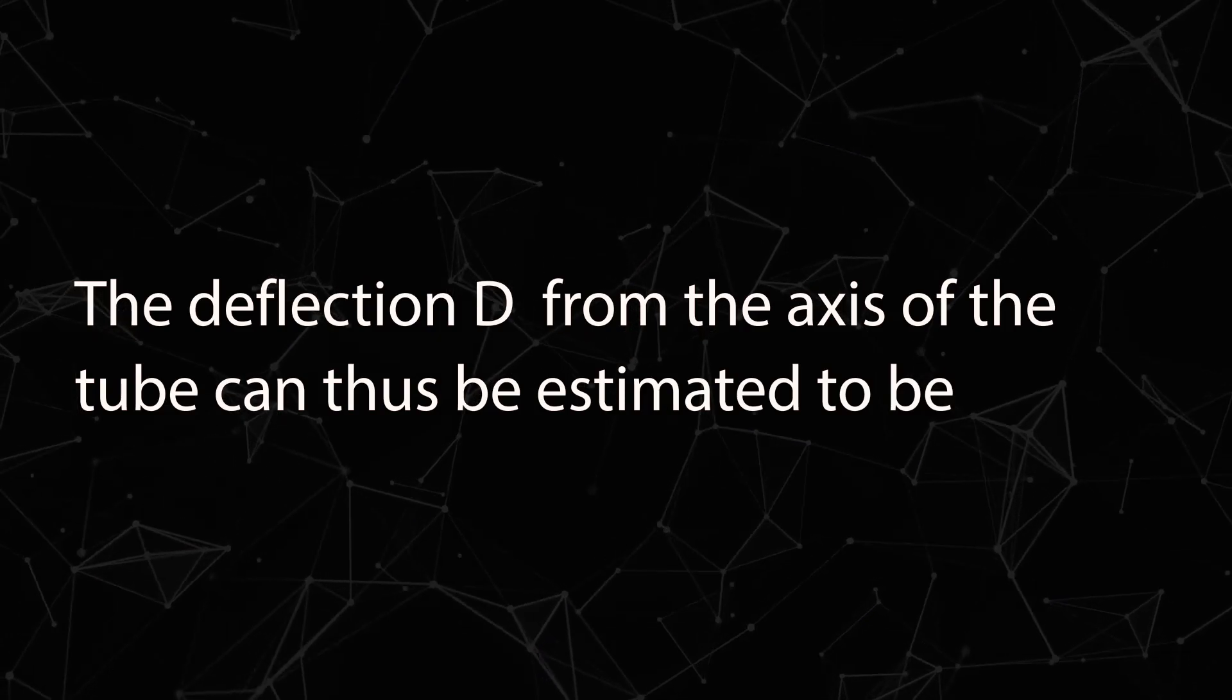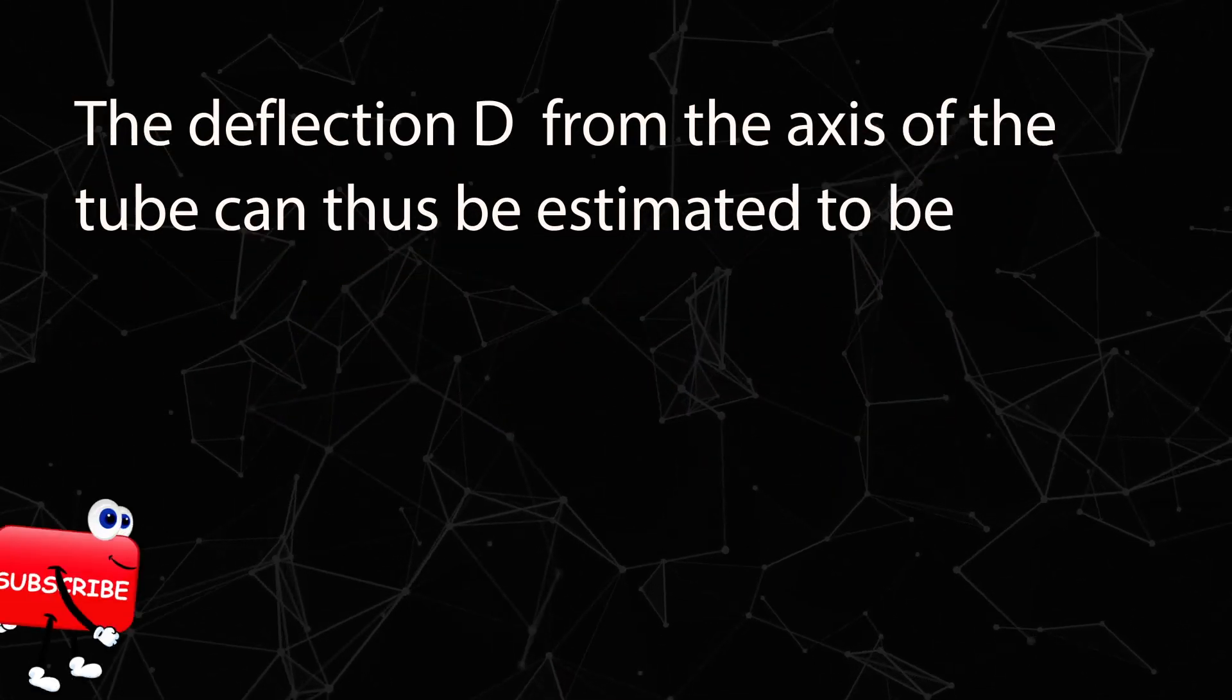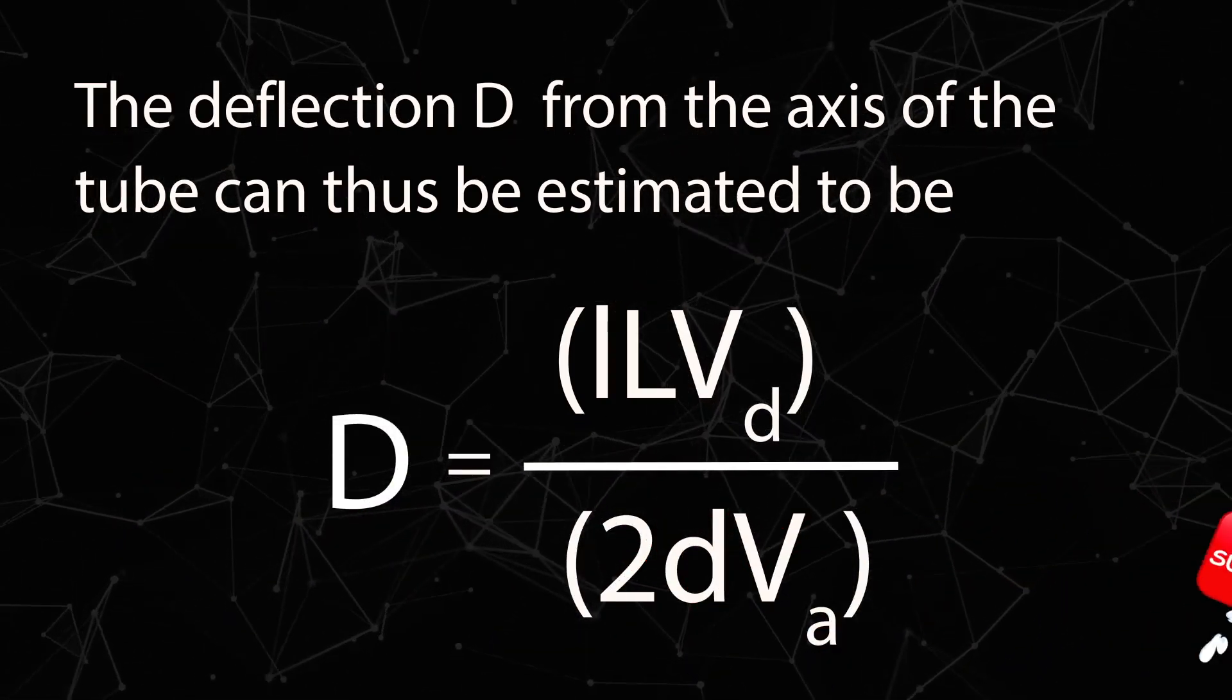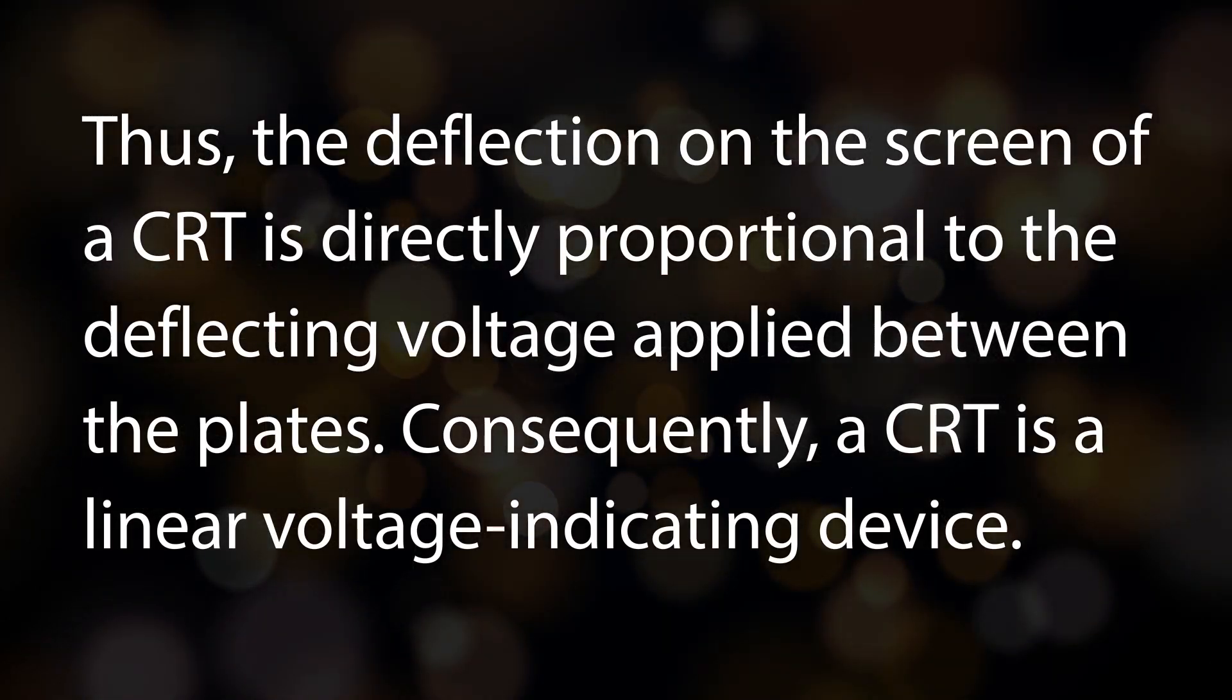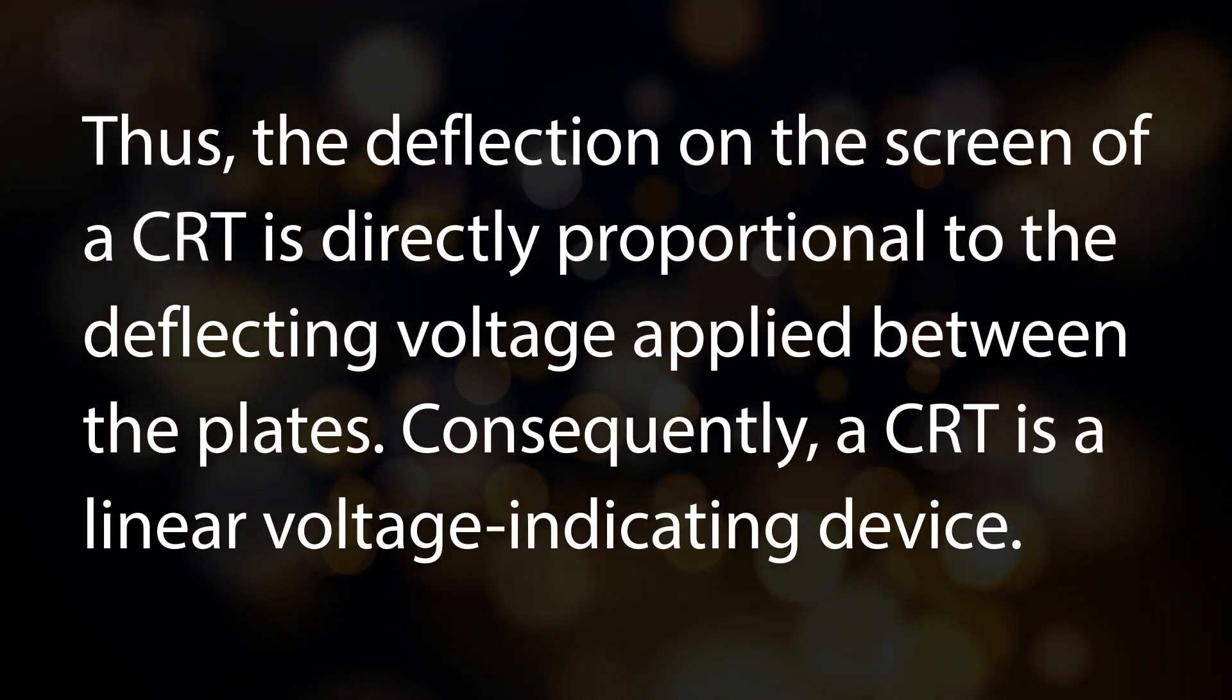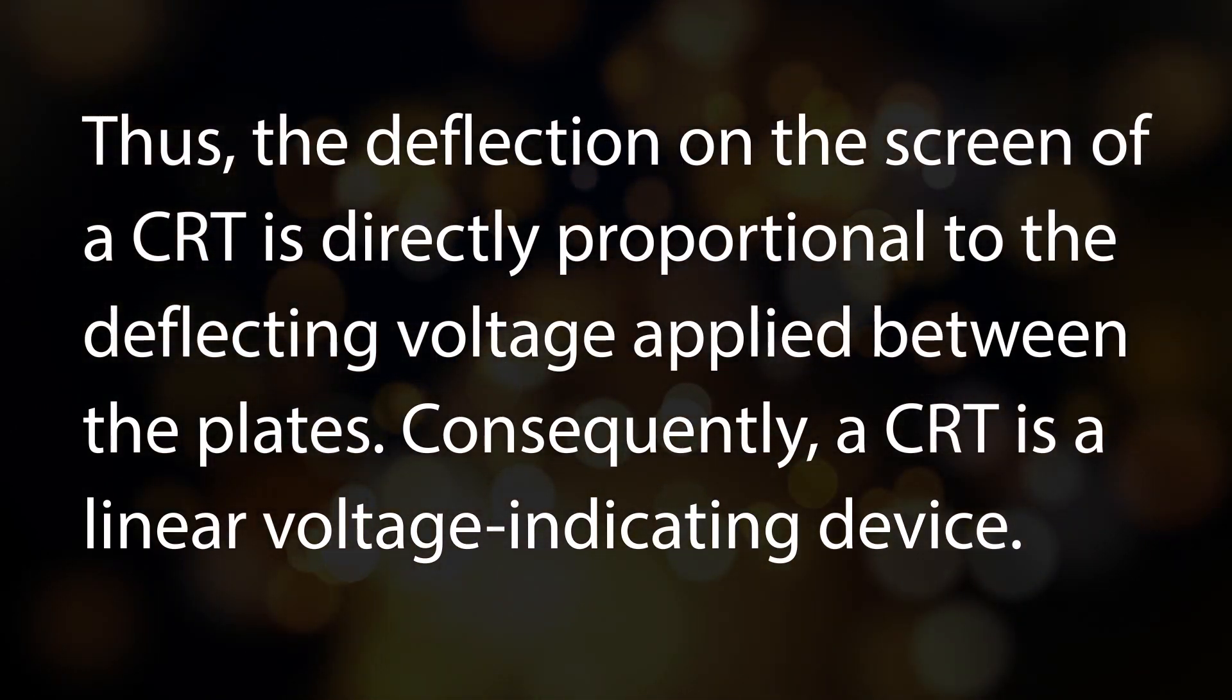The deflection D from the axis of the tube can thus be estimated to be D equals to LLVD by 2DVA. Thus the deflection on the screen of a CRT is directly proportional to the deflecting voltage applied between the plates. Consequently a CRT is a linear voltage indicating device.